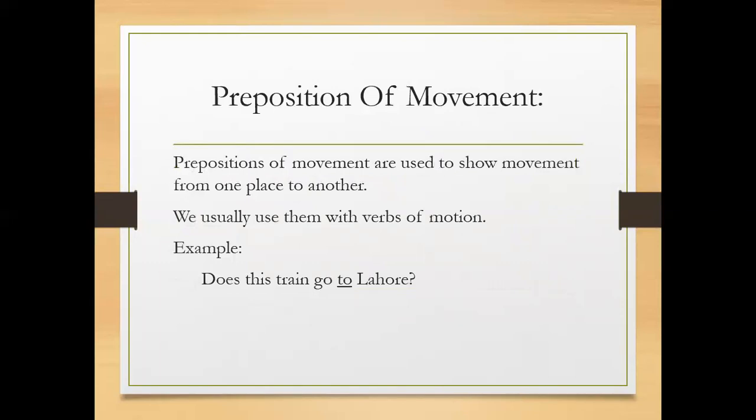Prepositions of movement are used to show movement from one place to another. Aapko bitaati hain ke kis jagha se kis jagha tak kaam ho raha hai. And we usually use them with verbs of motion. For example, does this train go to Lahore? Here 'to' is the preposition of movement.